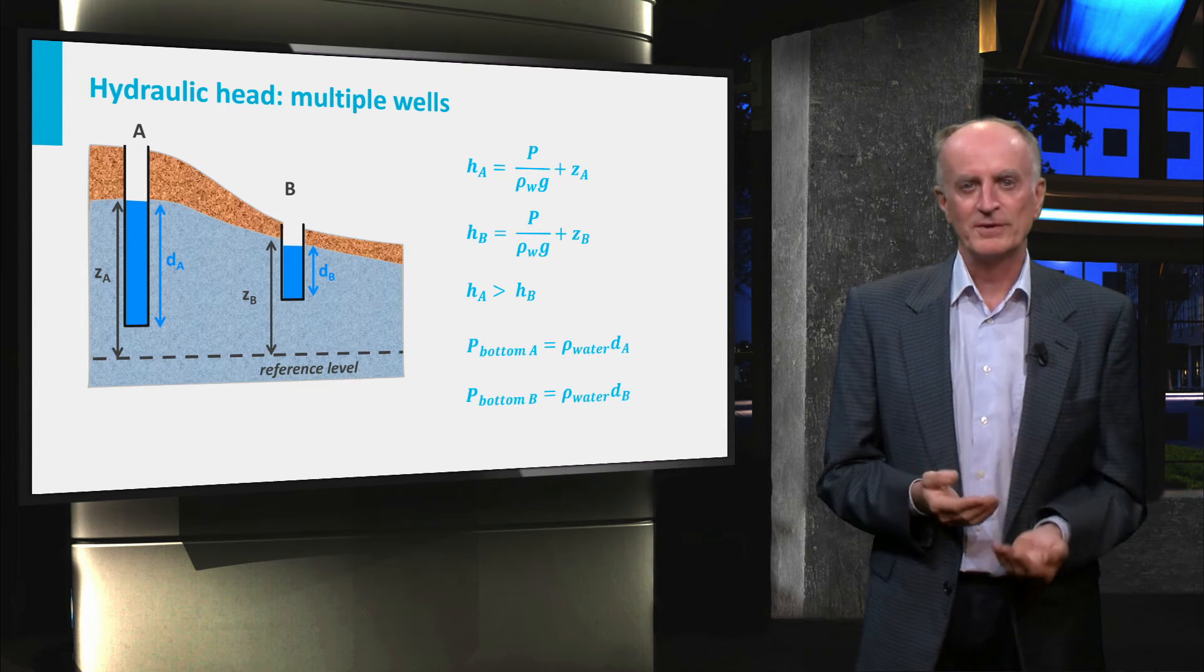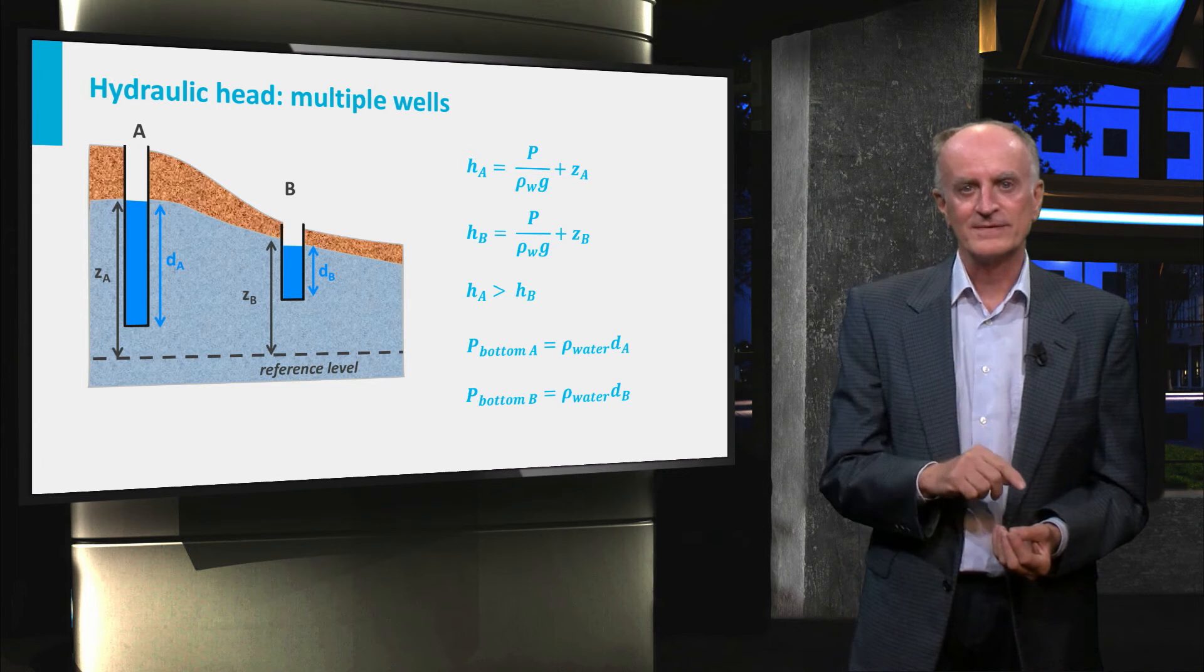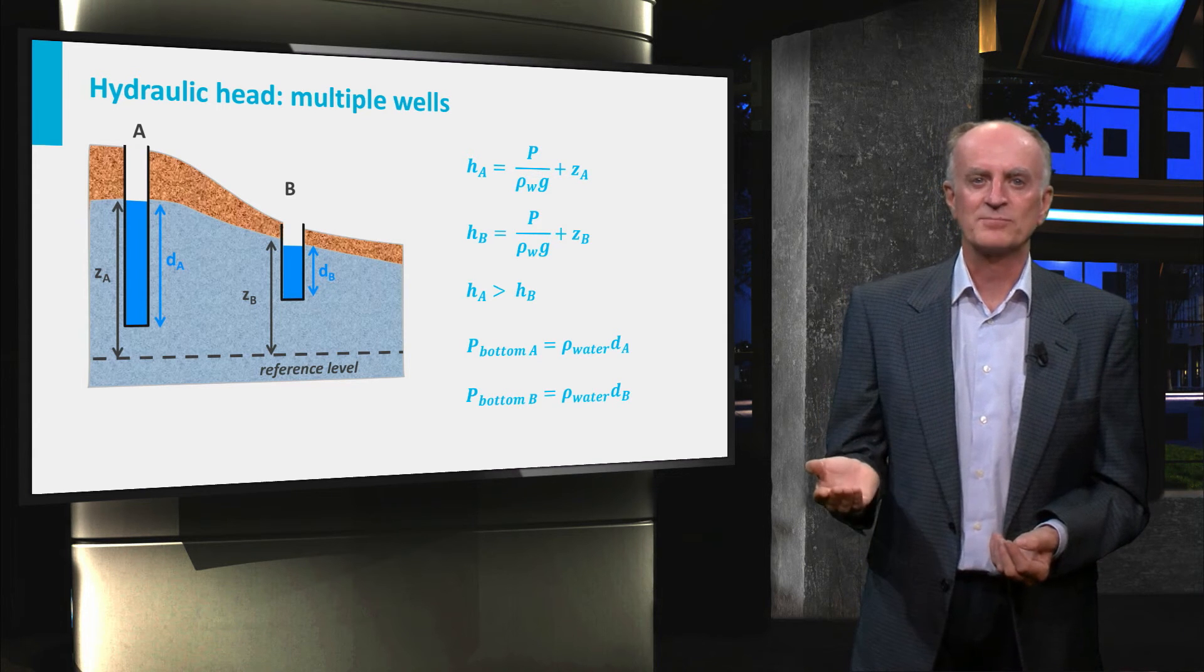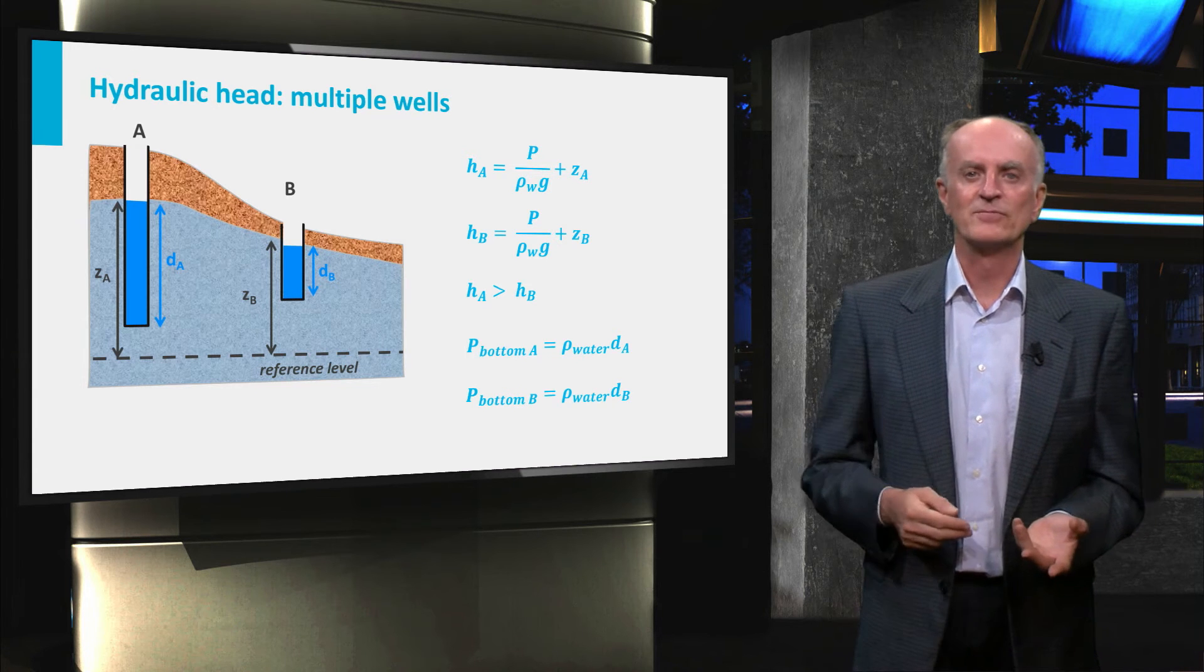The pressure at the bottom of the two wells depends on the height of the well itself. In the case shown in the figure, the pressure at the bottom of well A is larger than that of well B.